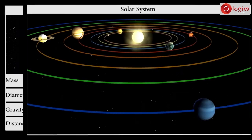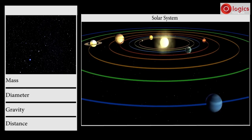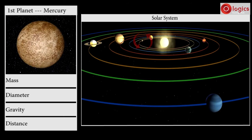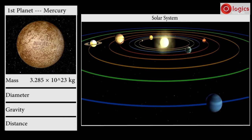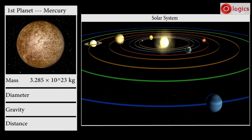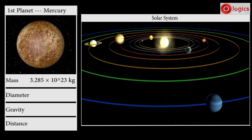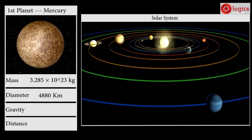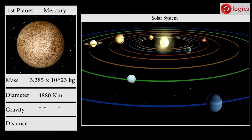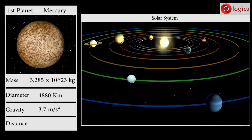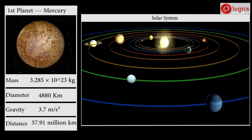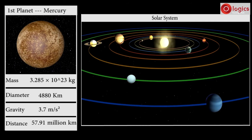Let's know about planets in the solar system in detail. The first planet in the solar system is Mercury. Mass of Mercury is 3.285 × 10^23 kilograms. Its diameter is 4,880 kilometers. Gravity on Mercury is 3.7 meters per second squared, and distance of Mercury from the Sun is 57.91 million kilometers.